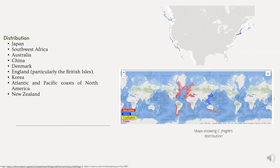Regarding distribution, even though it is native to the coastal areas of Japan, it has found its way to different parts of the world such as Southwest Africa, Australia, China, Denmark, England, Korea, the Atlantic and Pacific coasts of North America, and New Zealand.